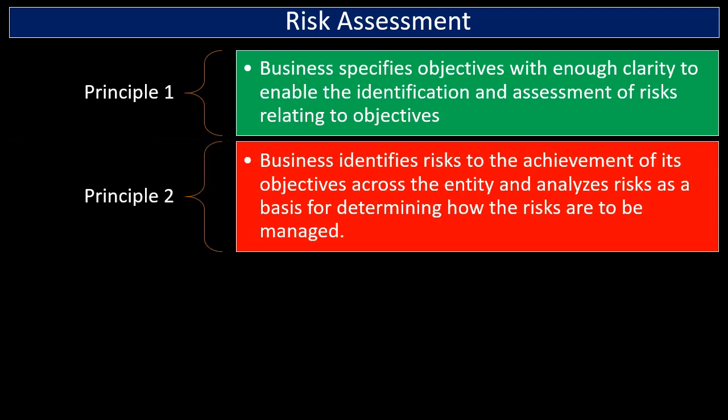Principle number two: the business identifies risks to the achievement of its objectives across the entity and analyzes risks as a basis for determining how they are to be managed. Once we understand what the risks are, we want to see them across the organization, and then we can come up with a plan to deal with and mitigate those risks.